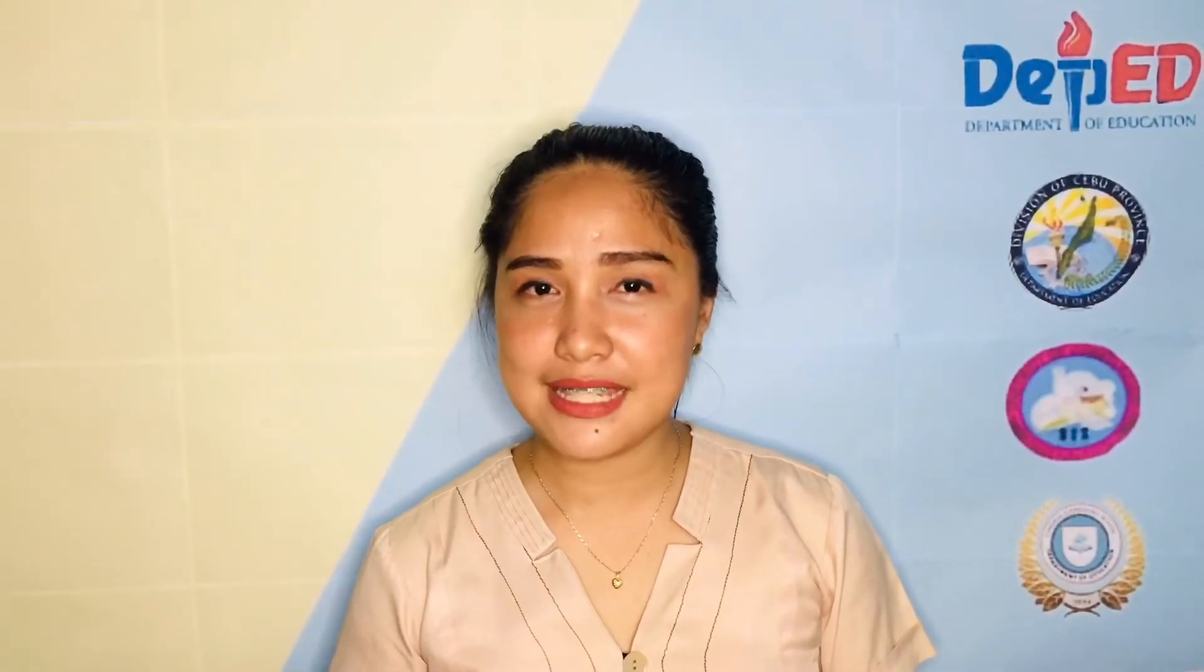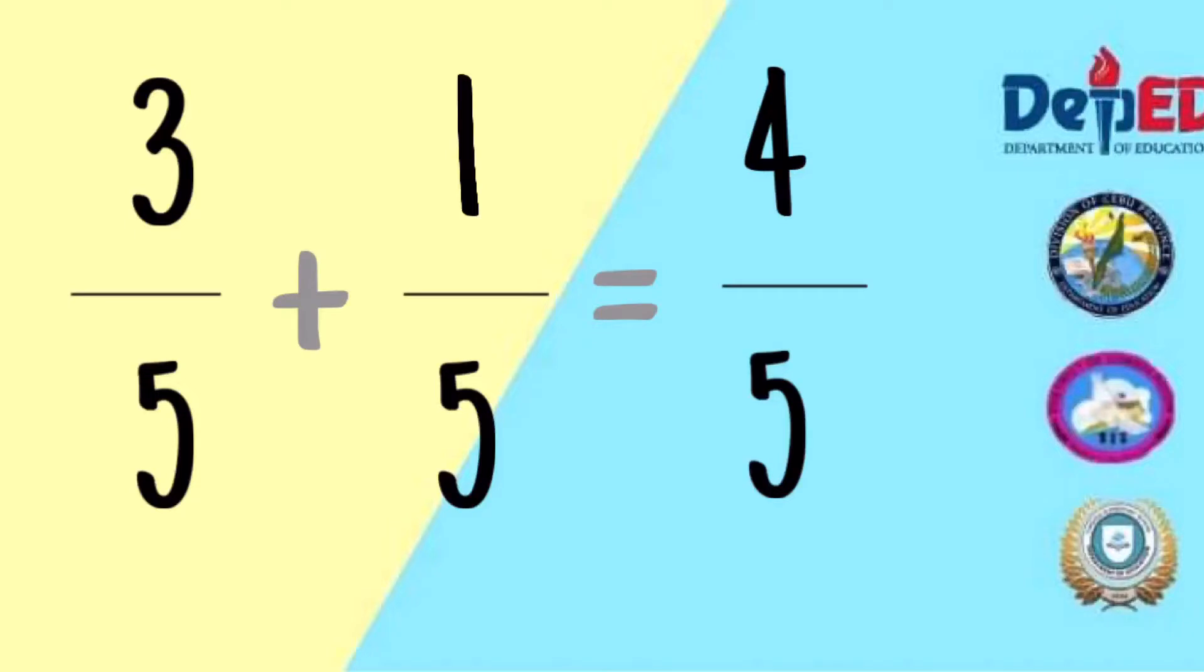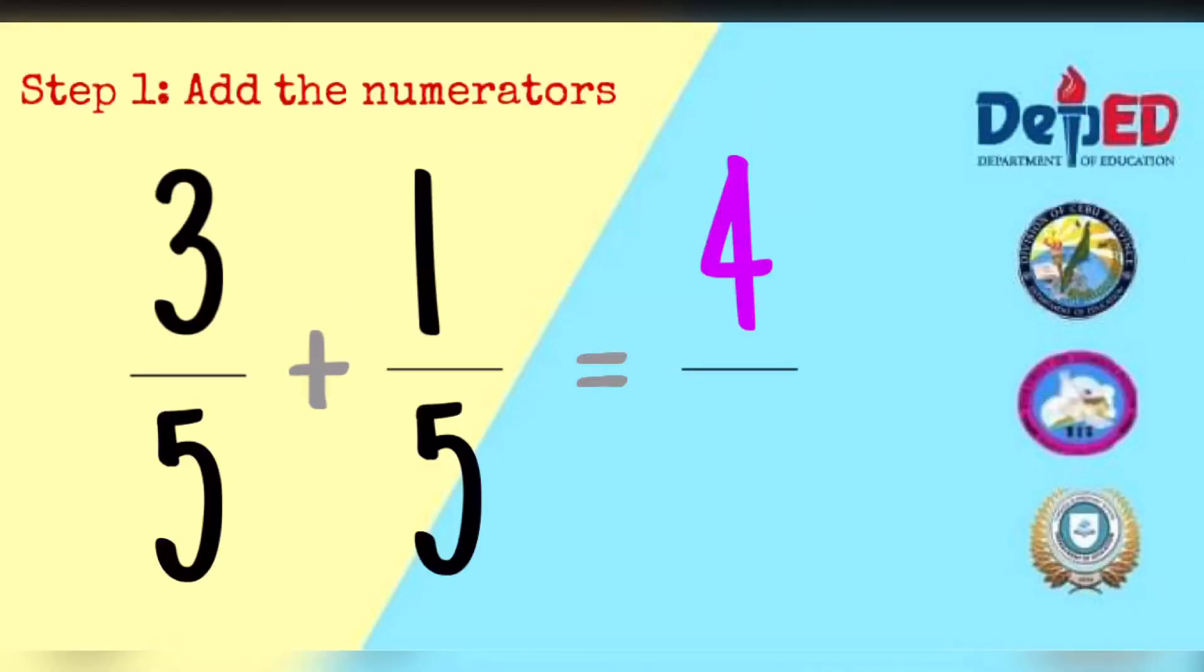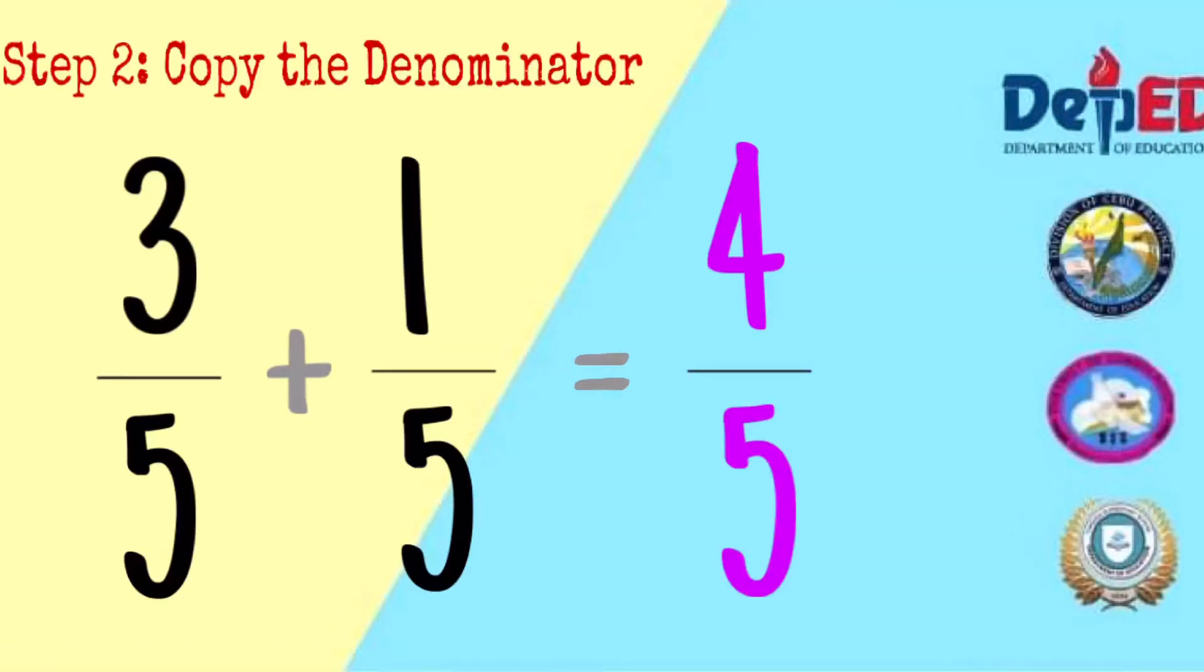Let's try 3 fifths added to 1 fifth. 3 fifths plus 1 fifth equals 4 fifths. Step 1: Add the numerators. Then, copy the denominator 5. We have the answer, 4 fifths. 4 fifths is already the simplified form or the lowest term.